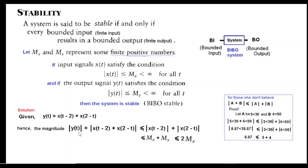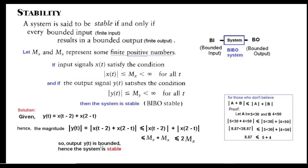Since the magnitude of the output is less than 2Mx, which is a finite value, for any finite (bounded) input we obtain a bounded output. Therefore y(t) is bounded and the system is stable — a BIBO system. This confirms all the properties: the system is linear and stable, but not memoryless, not time invariant, and not causal. Thank you.